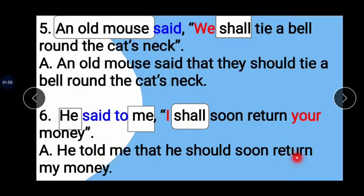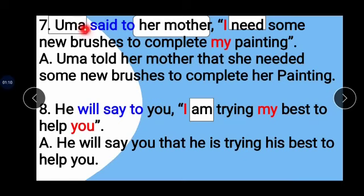Example 7: Umma said to her mother, 'I need some new brushes to complete my painting.' Umma is the subject and 'her mother' is the object. 'Said to' changes to 'told' and conjunction 'that' is added. 'I' changes to 'she,' 'need' changes to 'needed,' and 'my' changes to 'her.' Answer: Umma told her mother that she needed some new brushes to complete her painting.